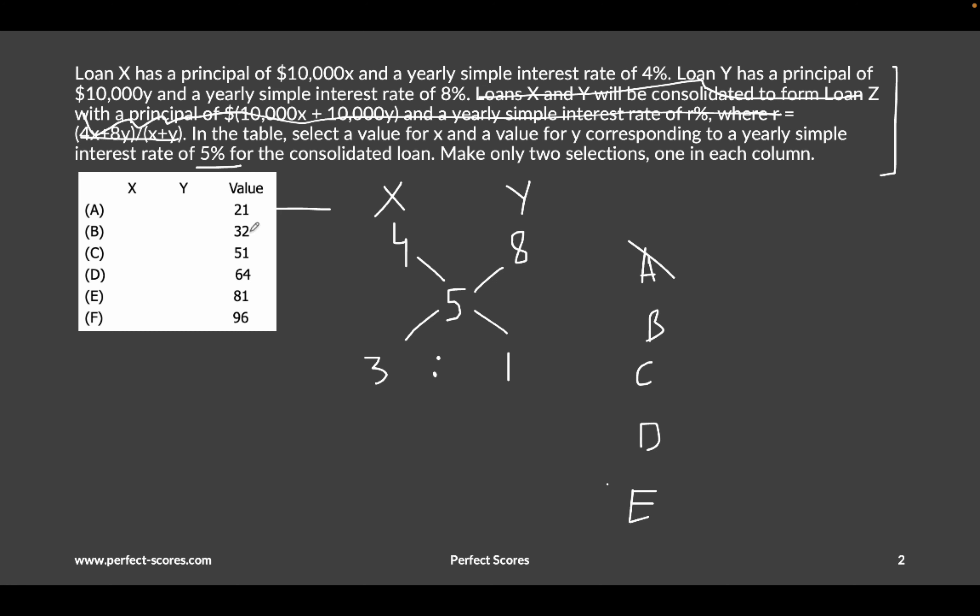If Y is 32, then X has to be 3 times it, which is 96. So B is one of the possible answers. If Y is 51, then X has to be 153, which is not one of the answer options. If Y is 64, then X has to be 3 times it, which is not part of the answer options. Similarly, if Y is 81, then X is not part of it, which means E is also not the answer. That means we're left with only answer option B,